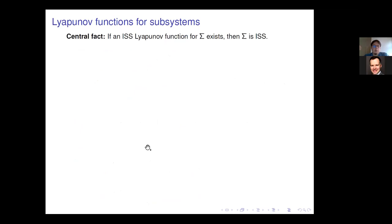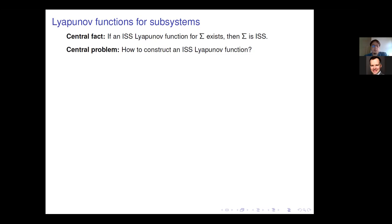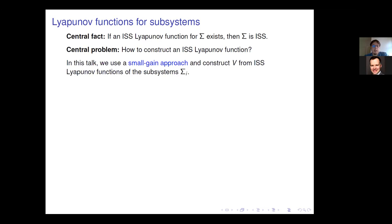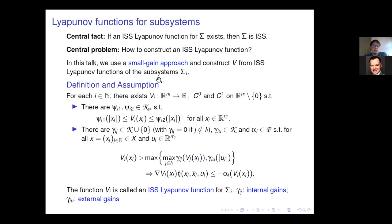The central fact is: if we have an ISS Lyapunov function as defined, then the system is ISS. This leads to the problem of how to construct such a Lyapunov function. In this talk we use a small gain approach, constructing V from ISS Lyapunov functions of the subsystems sigma_i.